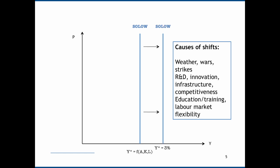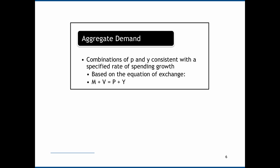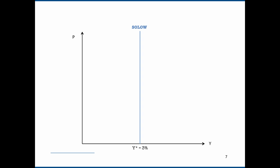The second component is Aggregate Demand. The definition of aggregate demand is combinations of inflation and real GDP growth that are consistent with a specified rate of spending growth. We're going to derive this from the equation of exchange, which says that M plus V — money supply growth plus velocity of circulation — is equal to inflation plus real GDP growth: M plus V equals P plus Y. That equation of exchange is also the equation of the aggregate demand curve. We have the variables P and Y on the two axes, and if we rearrange that equation, we see that the aggregate demand curve is downward sloping with a slope of negative 1.